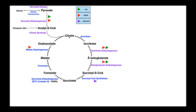Citrate is going to be converted to isocitrate by the enzyme aconitase (sometimes called aconitate hydratase). Isocitrate is just an isomer, so this is still six carbons. The next enzyme is isocitrate dehydrogenase, which performs what we call an oxidative decarboxylation — so not only do we generate an NADH (the red triangle), we also lose a carbon dioxide. If we lose a carbon dioxide, we're down one carbon atom, so isocitrate with six carbons becomes alpha-ketoglutarate, a five-carbon compound.